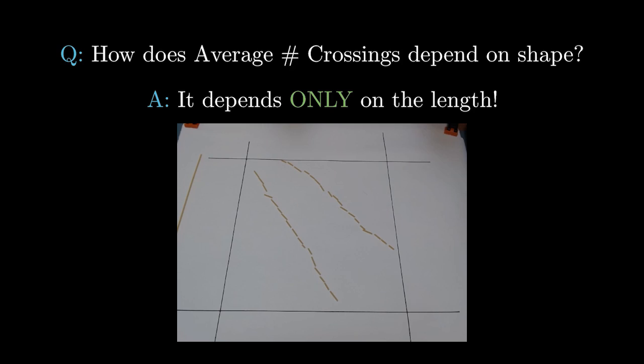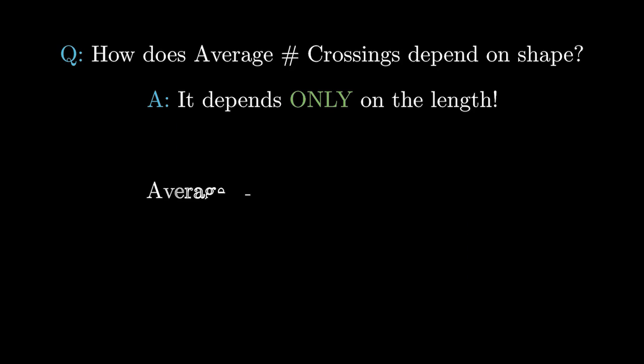The same cutting into tiny pieces argument actually shows us that the average number of crossings is proportional to the length of the noodle. That is to say, there is a universal constant c so that the average number of crossings is equal to c times the length of the noodle. If we can somehow find a way to calculate the value of c, then we can solve our problem by simply plugging into this equation.